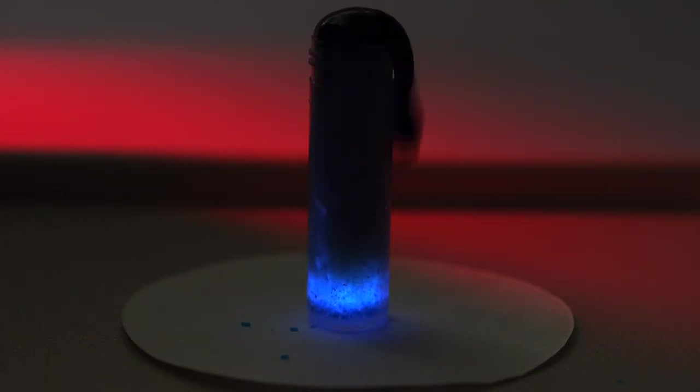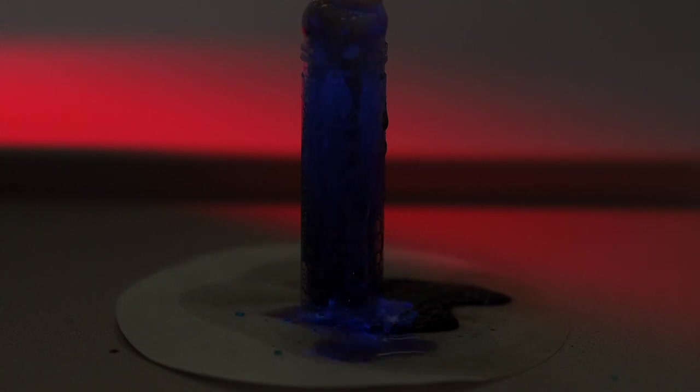Copper sulfate helps hydrogen peroxide oxidize luminol, which causes a blue glow. As the hydrogen peroxide decomposes, it releases oxygen bubbles, causing the mixture to foam. The oxidation of luminol and decomposition of hydrogen peroxide make the glowing volcano erupt.